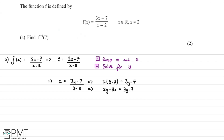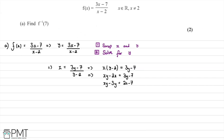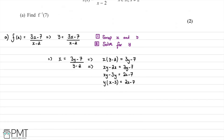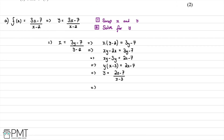We collect all y terms on the left-hand side and x terms on the right. This gives xy - 3y = 2x - 7. Taking out a common factor of y: y(x - 3) = 2x - 7. Dividing both sides by (x - 3), we get y = (2x - 7) / (x - 3), so f⁻¹(x) = (2x - 7) / (x - 3).